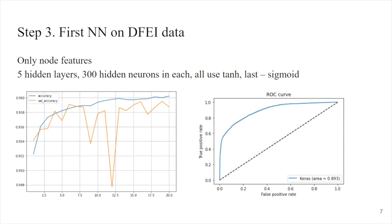The next thing I did was check the representativity of the data, that the data is actually valid and correct. I fed only the particle node data — 13 features for each node, 6,000 graphs — into a simple feed-forward neural network with five hidden layers and 300 hidden neurons. The result kind of surprised me. There is a huge peak in the accuracy, but when you look closely, it's only from 94% to 95%, so 1%. We start our training at epoch zero with 95% accuracy, and after just starting training we already have 94% accuracy.